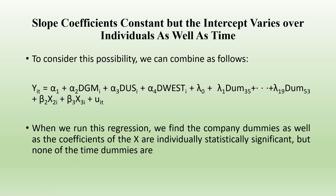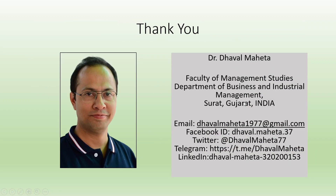Now combining the two effects — cross section and time period — we can see dummy variables for GM, US, and West as cross-section dummies, and dummy variables for the time periods. In previous videos, the cross section effect and time period effect in fixed effects models were discussed separately. In this video, we are going to run both of them simultaneously.